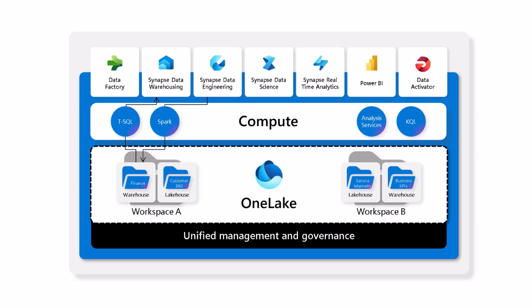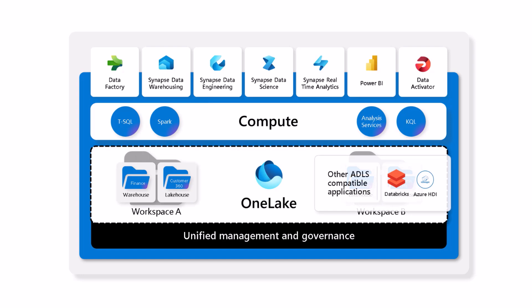Business users can view their Power BI reports using the same copy of data with Direct Lake mode in the Analysis Services engine. When defining the data strategy for your organization, you no longer need to optimize for different teams with different skill sets and preferences. Teams that want to work with SQL can work with SQL. Teams that want to work with Spark can work with Spark. Everyone builds the same data lake — there are no silos. And with open access for OneLake, the same is true even for teams using compute engines outside of Fabric.